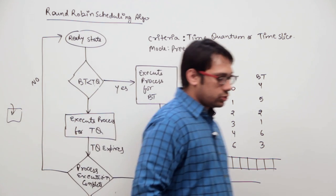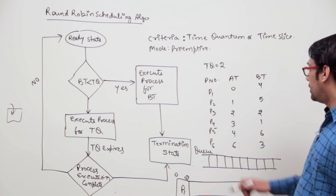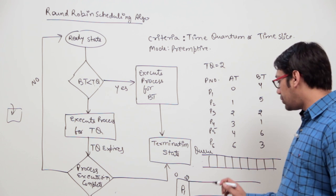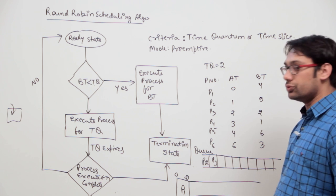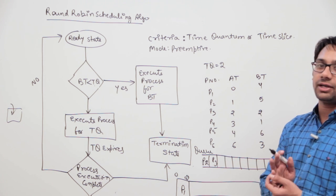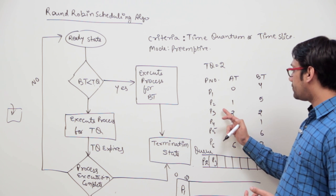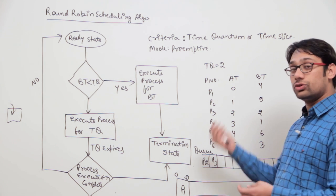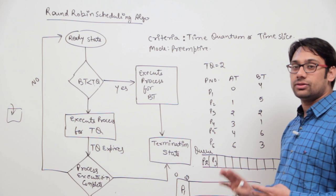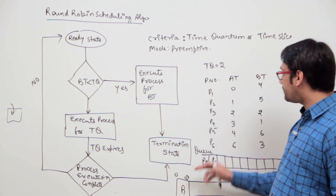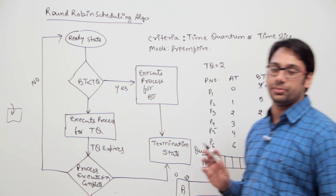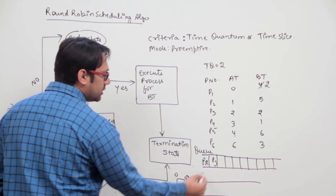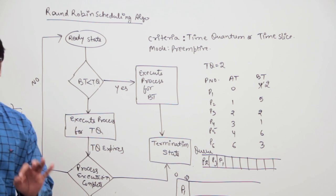By the time two units have elapsed, two processes have arrived: P2 and P3. We will put P2 and P3 in the queue. Even though P3 is arriving at time 2 when P1 is finishing its time quantum, P3 is placed inside the ready queue before P1. After finishing its time quantum at time 2, P1 will still need two more units of burst time, so P1 will go back to the ready queue.